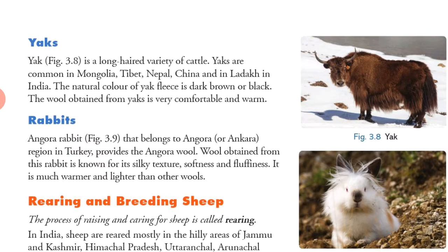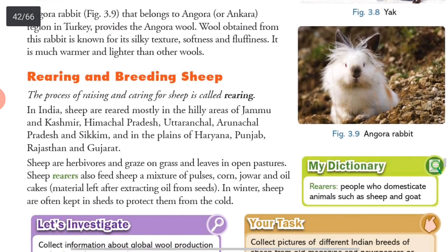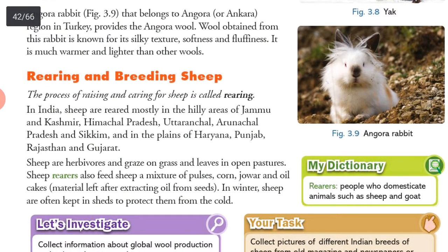Rearing and breeding sheep. The process of raising and caring for sheep is called rearing. In India, sheep are reared mostly in hilly areas of Jammu and Kashmir, Himachal Pradesh, Uttaranchal, Arunachal Pradesh, and in the plains of Haryana, Punjab, Rajasthan and Gujarat. Sheep are herbivores and graze on grass and leaves in open pastures.